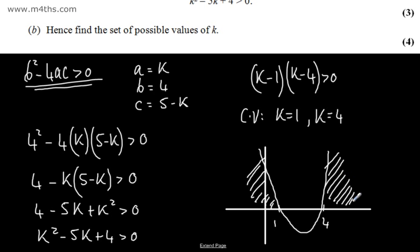We want this to be greater than 0, which is going to be this part right here, and this part right here. So we can say from this that k is going to be less than 1, or we have k greater than 4. So those are the set of possible values of k.